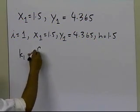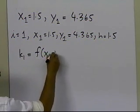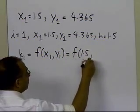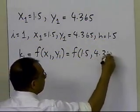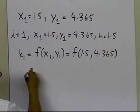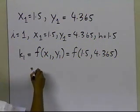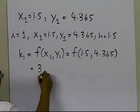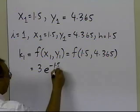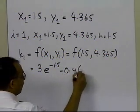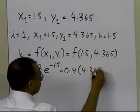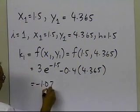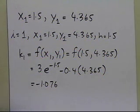So k1 will be the value of the function at x1, y1 — x1 is 1.5, y is 4.365 — and that will be equal to 3 to the power minus x, which is 1.5, minus 0.4 times y, which is 4.365, and this value here turns out to be minus 1.076. So that's what we get as the value of k1.